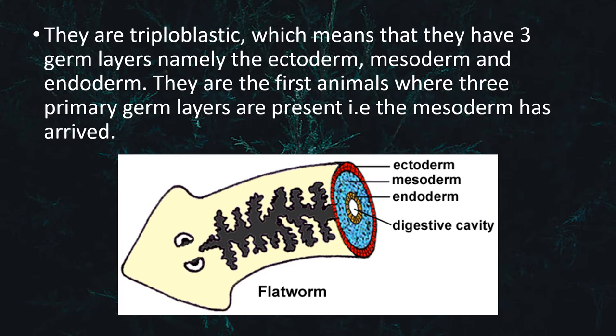In the phylum Coelenterata, only the ectoderm and the endoderm are present. But in this phylum, Platyhelminthes, the mesoderm has arrived.